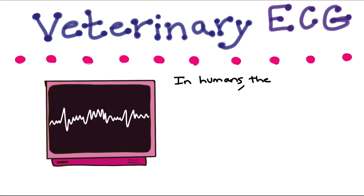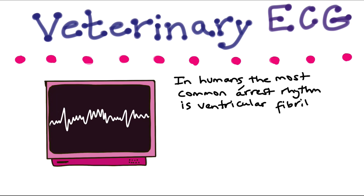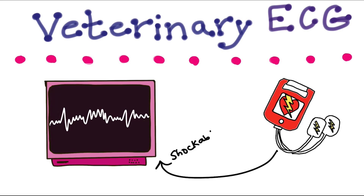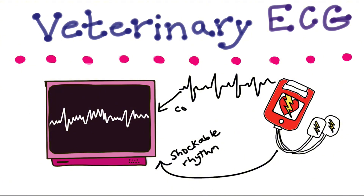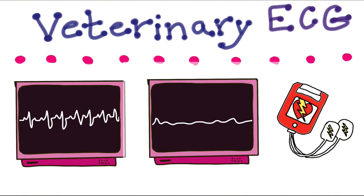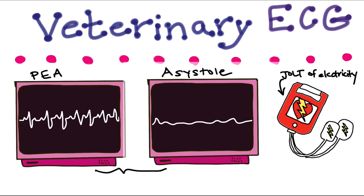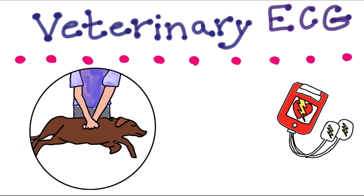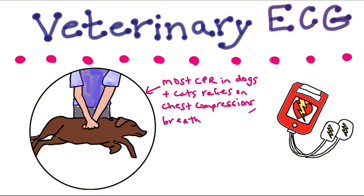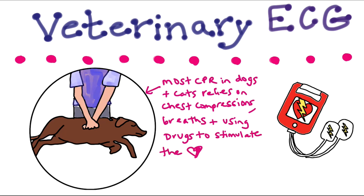In humans, the most common arrest rhythm is ventricular fibrillation — a shockable rhythm that can potentially convert back to normal sinus rhythm using defibrillator paddles, which give a jolt of electricity to essentially restart a normal rhythm. Asystole and PEA seen in dogs and cats are both non-shockable rhythms that don't respond to the paddles. So most CPR in dogs and cats relies on chest compressions, providing breaths, and using drugs to stimulate the heart.